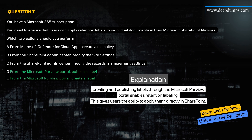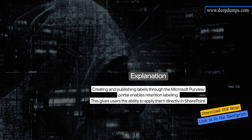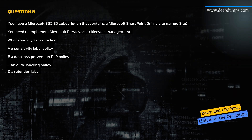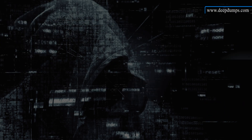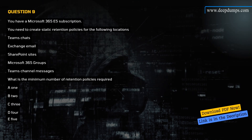Question 8. You have a Microsoft 365 E5 subscription that contains a Microsoft SharePoint Online site named SiteOne. You need to implement Microsoft Purview Data Lifecycle Management. What should you create first? A) A Sensitivity Label Policy, B) A Data Loss Prevention (DLP) Policy, C) An Auto Labeling Policy, D) A Retention Label. Correct answer is D. Explanation: Retention labels are the foundation of lifecycle management — they define how long data is retained and when it should be deleted.